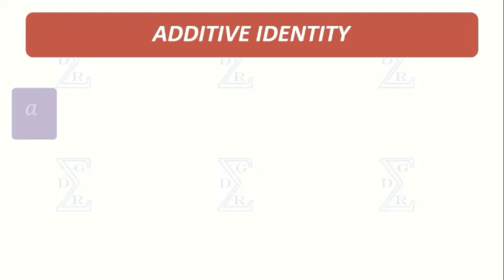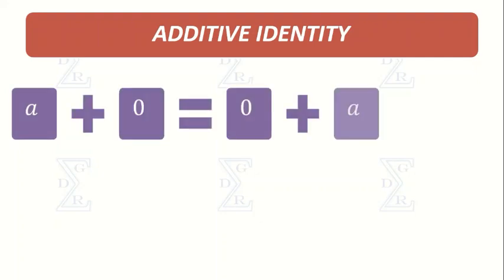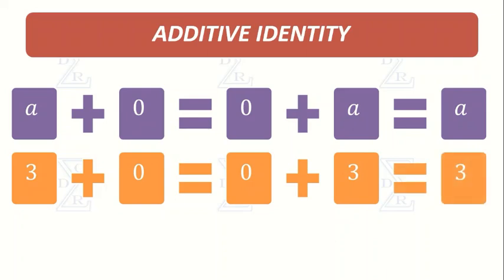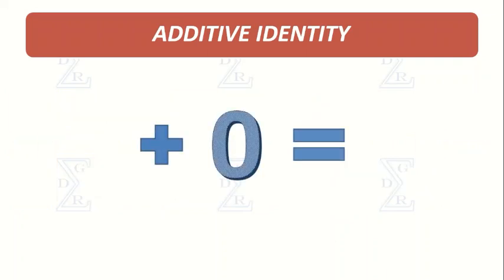So the formula for the additive identity is A plus 0, or 0 plus A, is A. According to the property, when 0 is added to a number, we get the same number. So 0 is an additive identity.